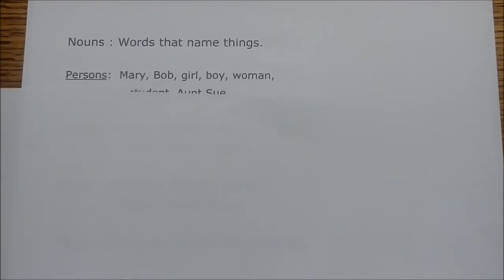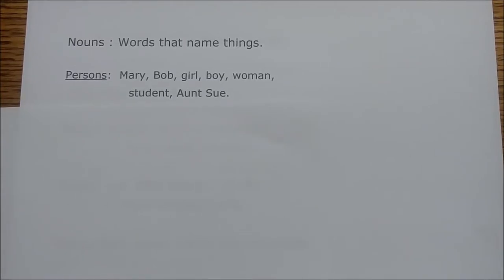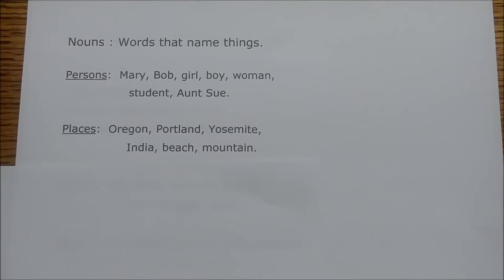The first kind of noun is persons. Examples like Mary, Bob, girl, boy, woman, student, and Sue — they're all people, or persons, and because of that they're all nouns. Nouns can also be places: Oregon, Portland, Yosemite, India, beach, and mountain are all places, and therefore all nouns.